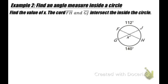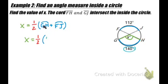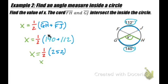Example 2: find the value of X, the angle where chords FH and GJ intersect inside the circle. By the property, X equals one-half the sum of arc GH and arc FJ, the vertical angle's intercepted arc. Substituting: X equals one-half of 140 plus 112, which is one-half of 252. Therefore, X equals 126 degrees.